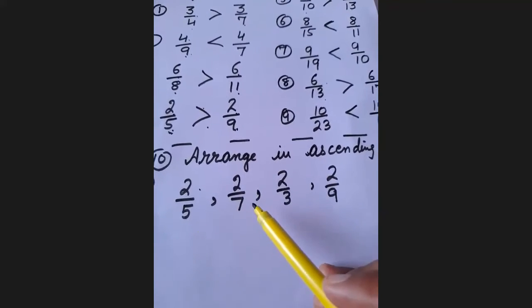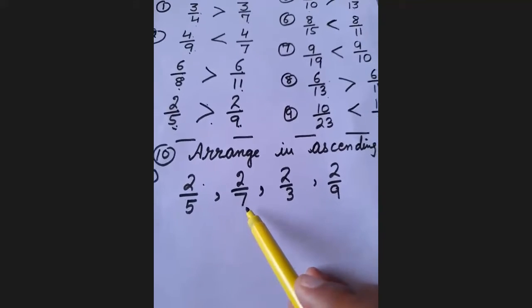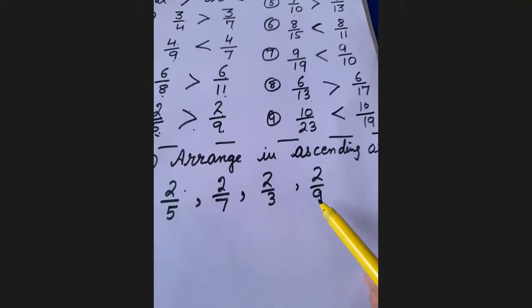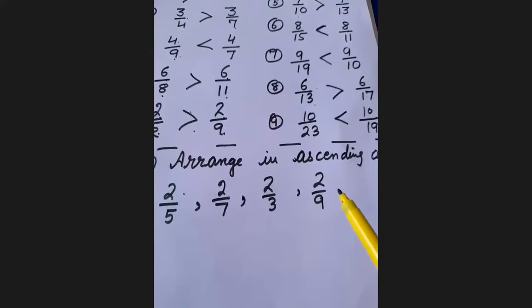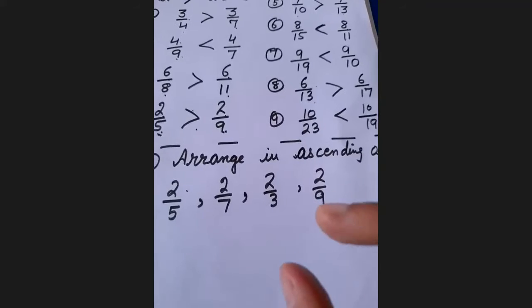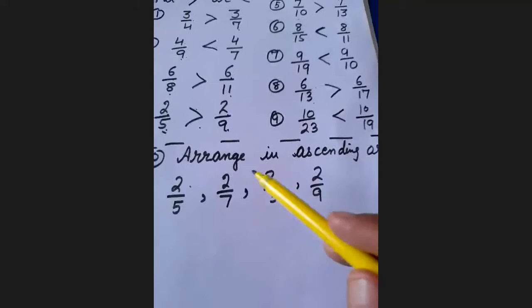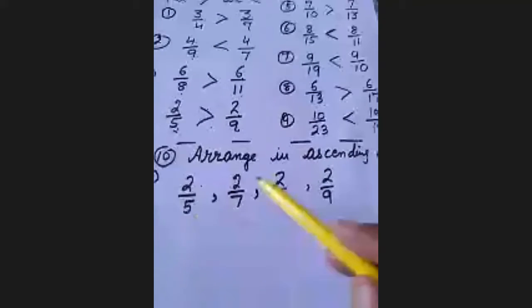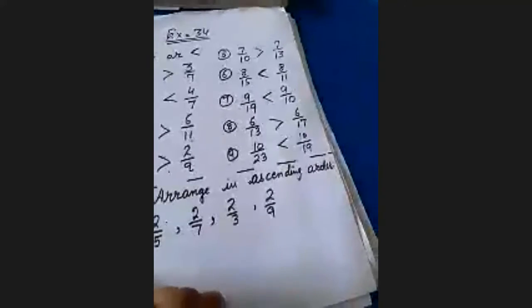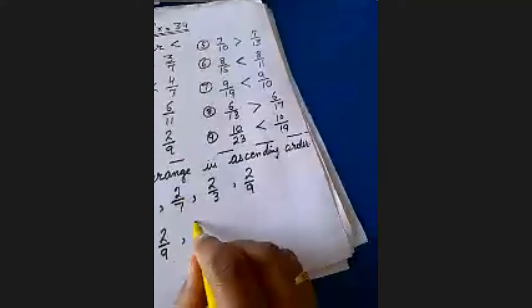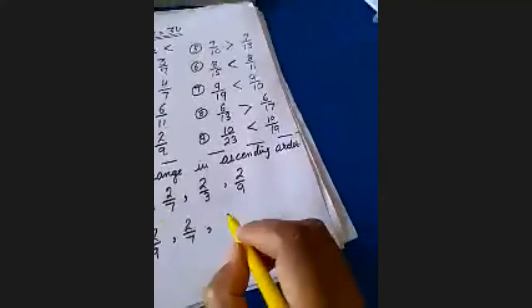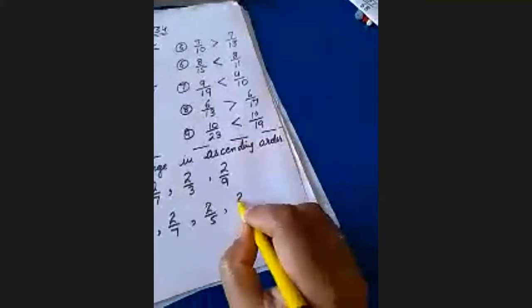Now compare the denominators: 5, 7, 3, 9. The smallest fraction has the largest denominator. So 2 upon 9 is the smallest number because 9 is the largest denominator. We write: 2 upon 9, then 2 upon 7, then 2 upon 5, and at last 2 upon 3, according to ascending order.